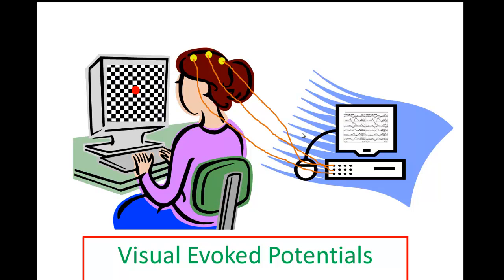There is a triphasic waveform identified on the computer screen that we will discuss in more detail. One of the main indications for getting a visual evoked potential is to identify if the patient has had any inflammation of the optic nerve — what we call optic neuritis. Optic neuritis has an association with multiple sclerosis. I will try to put this concept of visual evoked potentials in a nutshell.